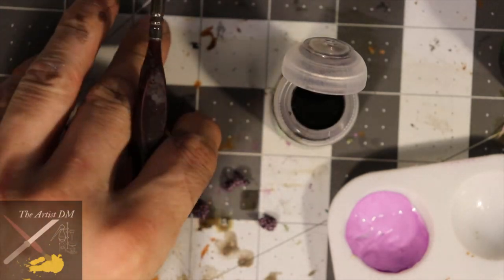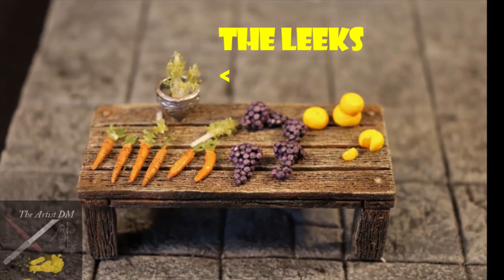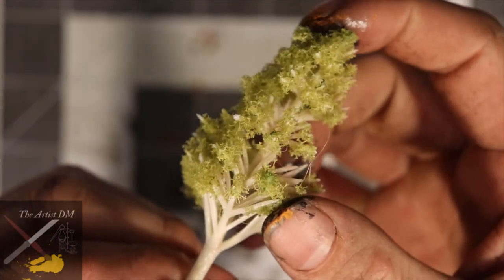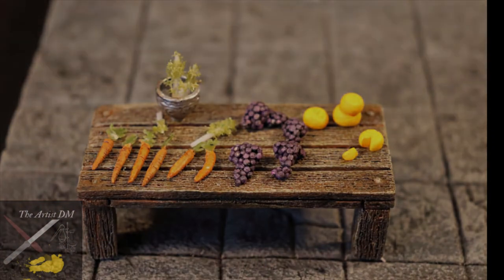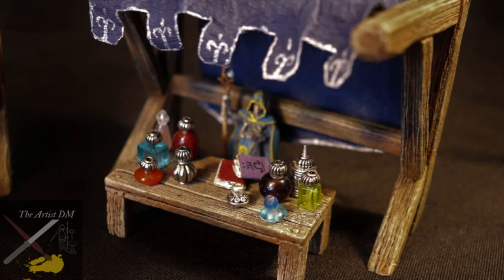And finally we have these leeks or bok choy, I'm not really sure what they're supposed to be but they look pretty cool. Tucked away on my desk I had these damaged trees that I got on Amazon for incredibly cheap. I just cut off a few branches and then immediately had the structure that I was looking for. With all the fun I had detailing, there's definitely going to be some future episodes with more tables and more market stalls.